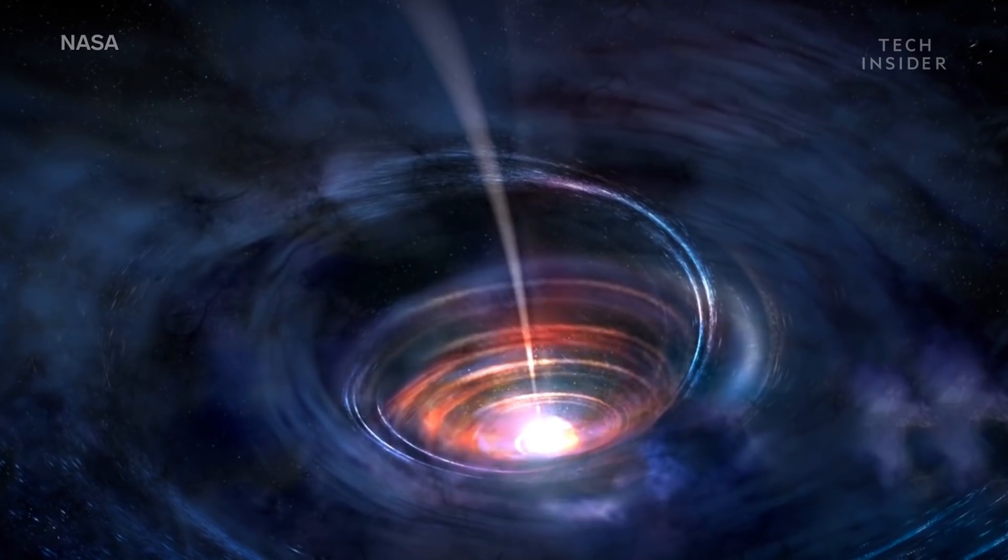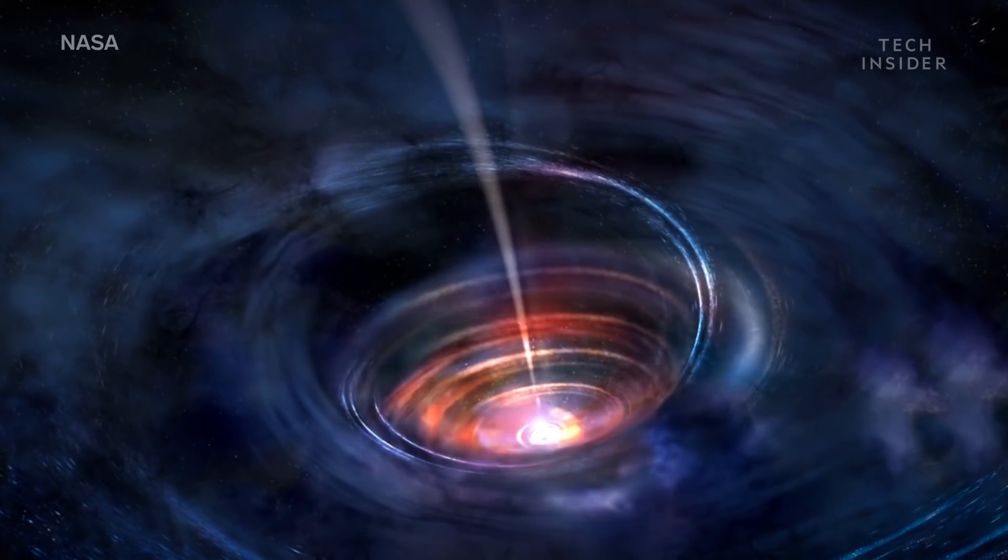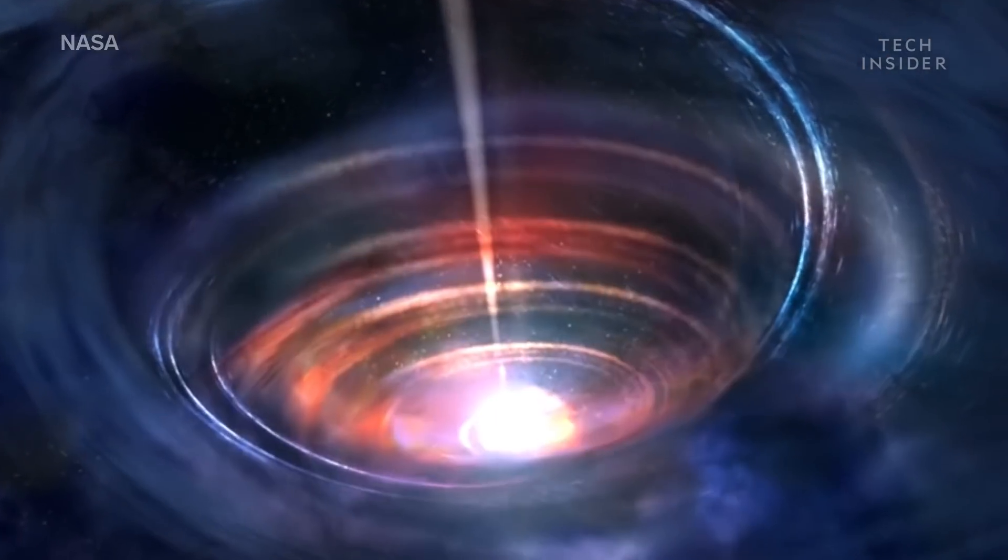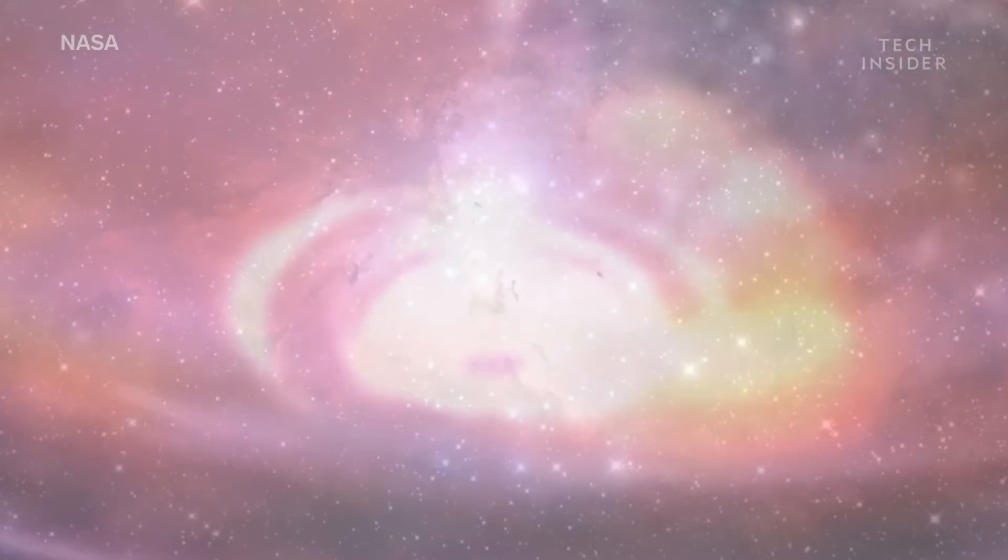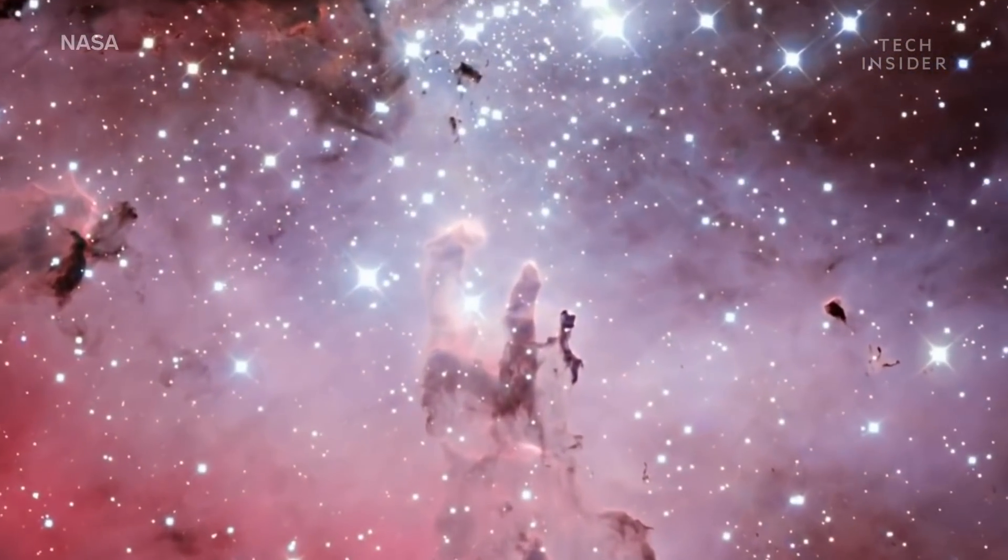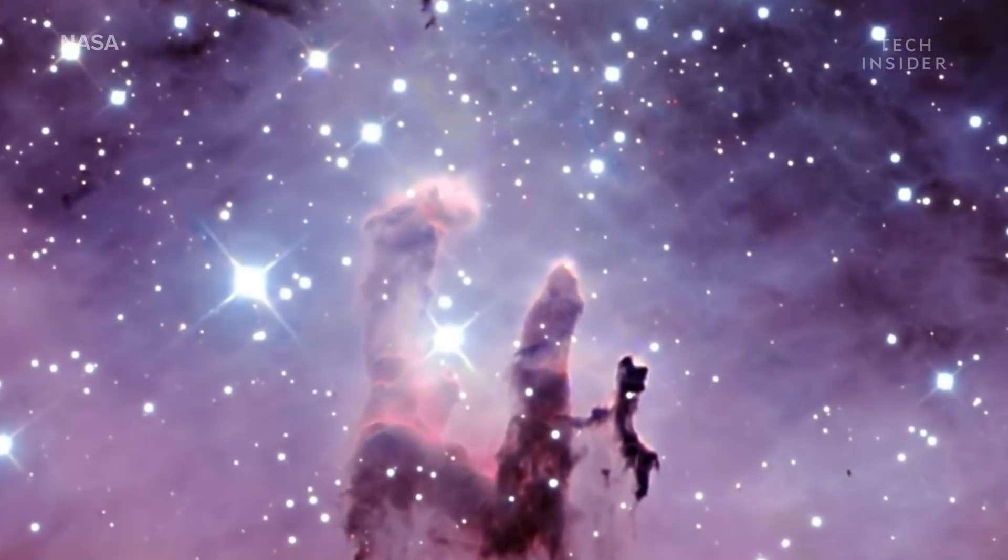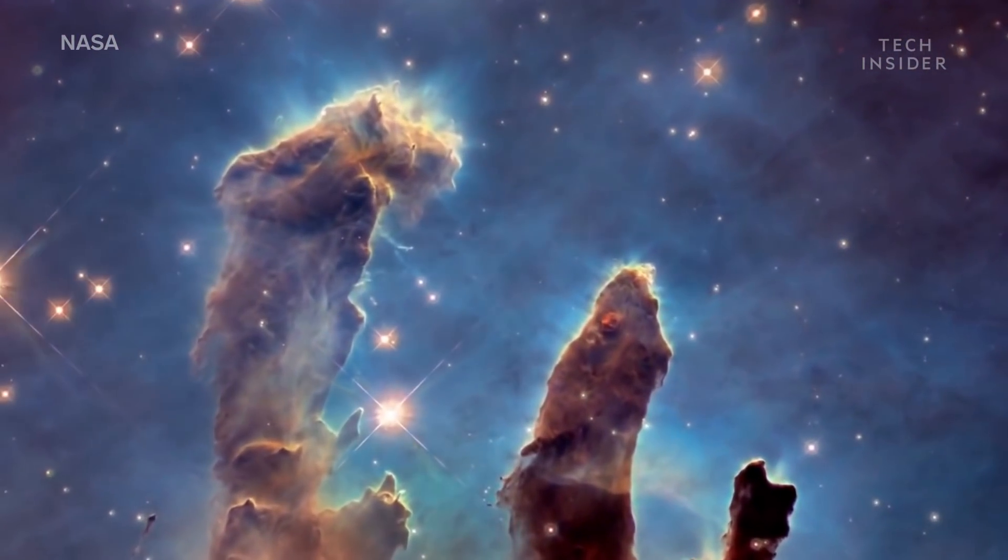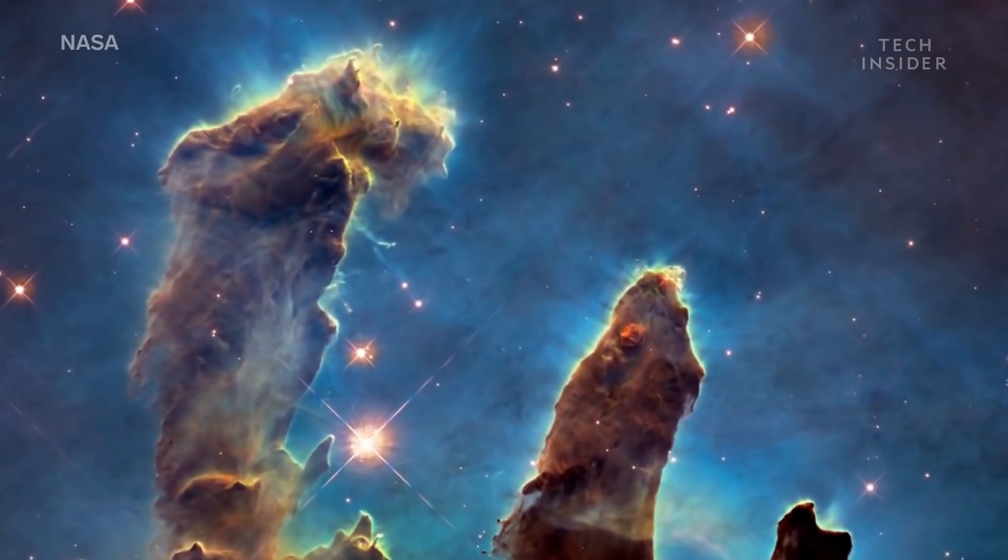As for what happens once you get through to the other side, no one really knows. But Berko has his own ideas. He says one possibility is that we'd arrive at some other remote part of our galaxy, potentially light years away from any planets or stars. But a second, and perhaps more intriguing possibility, is that we'd arrive in a different galaxy altogether.